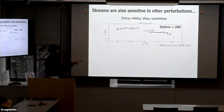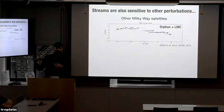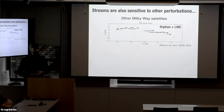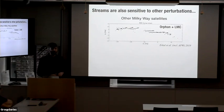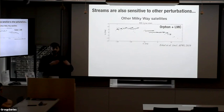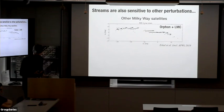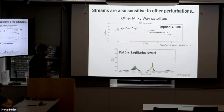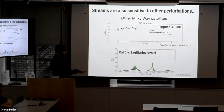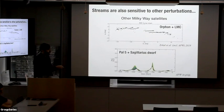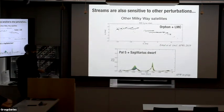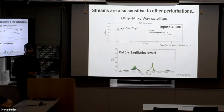Another thing that can happen is what I showed with Orphan — you can have other large satellite galaxies of the Milky Way that come close to some of the streams and leave more large-scale distortions that may evolve into complex morphologies later on. That was with Orphan and the LMC, but we actually think — and this is some new work I've been working on — that Palomar 5 actually comes pretty close to the Sagittarius galaxy itself, so that might also be a contributor to the funky morphology we see for Palomar 5.